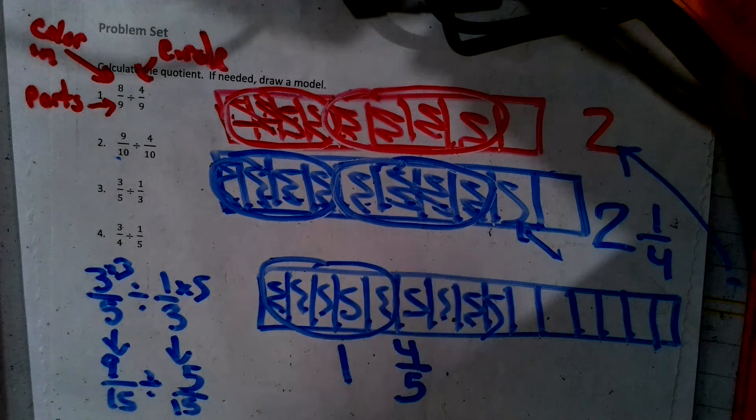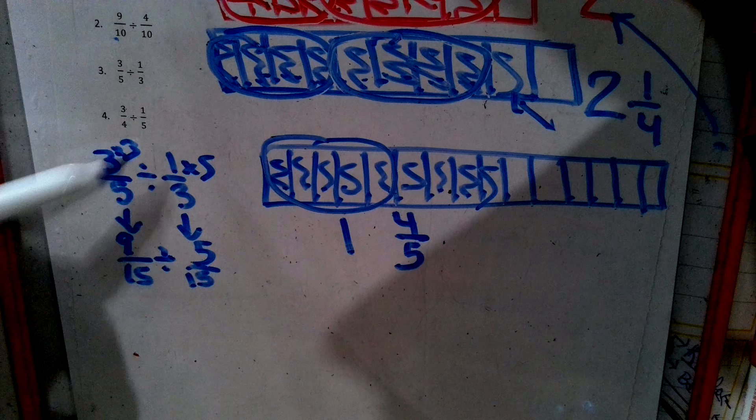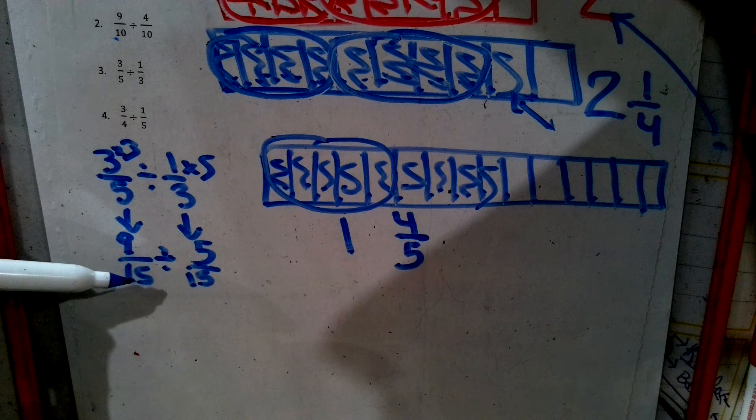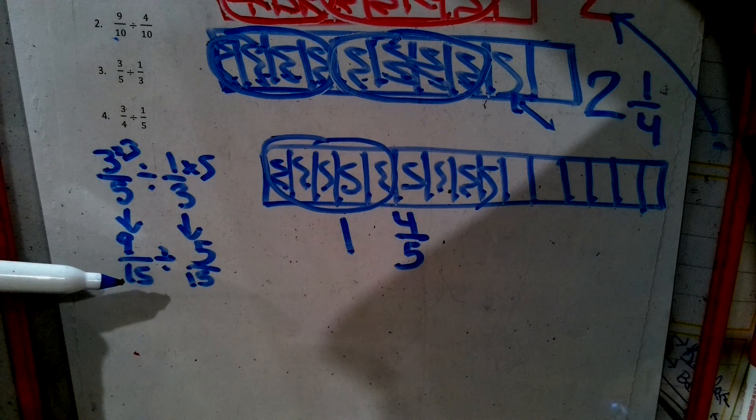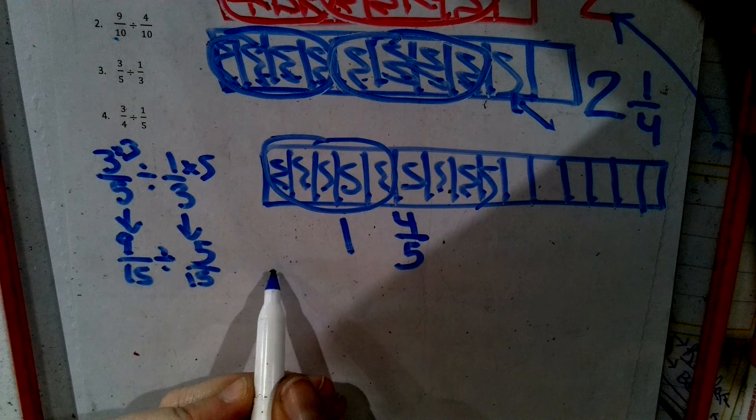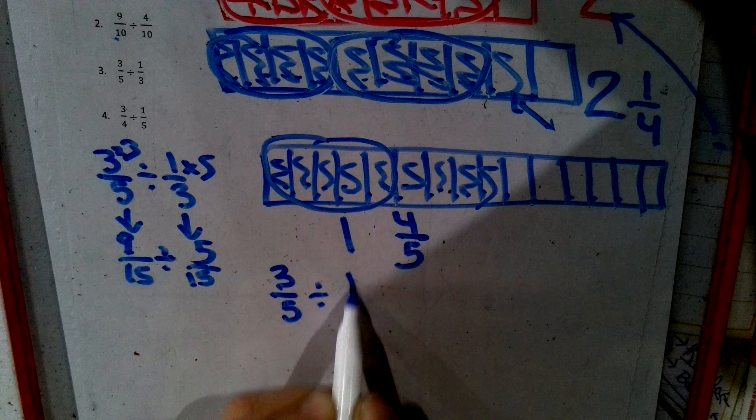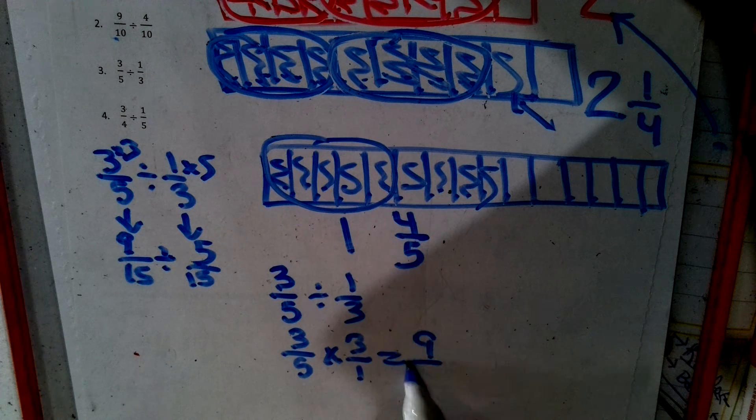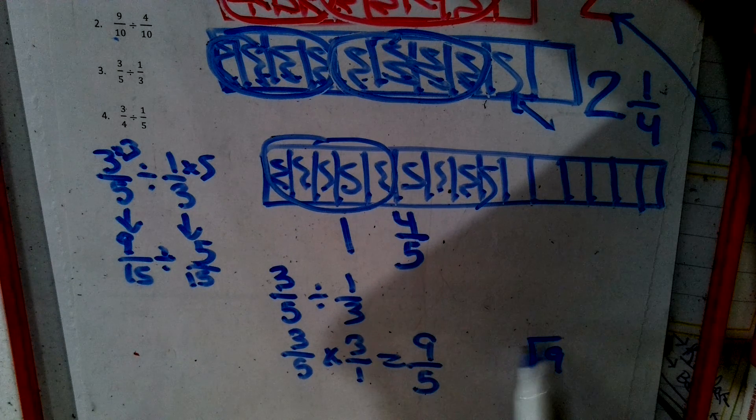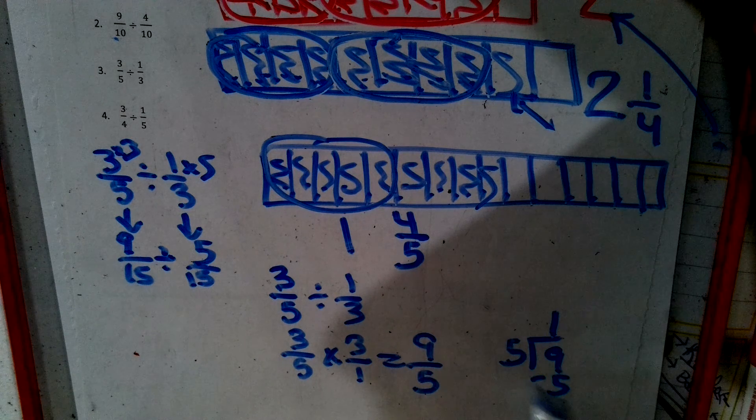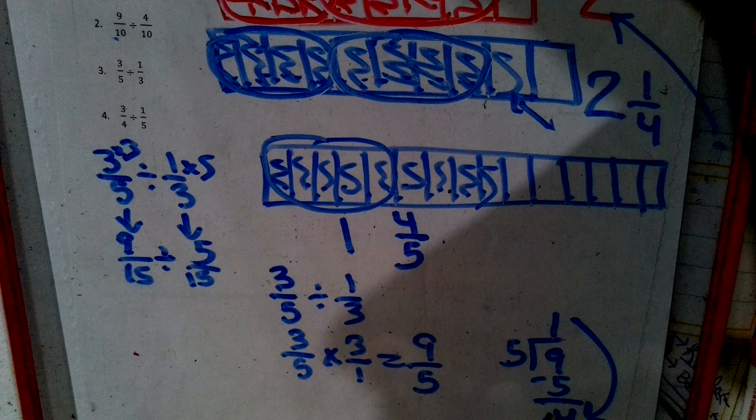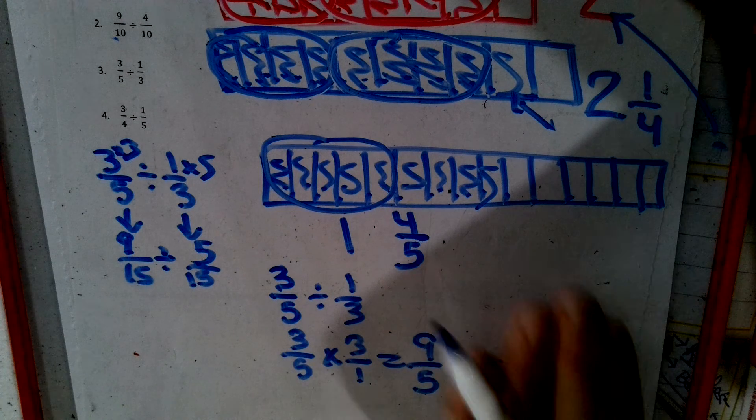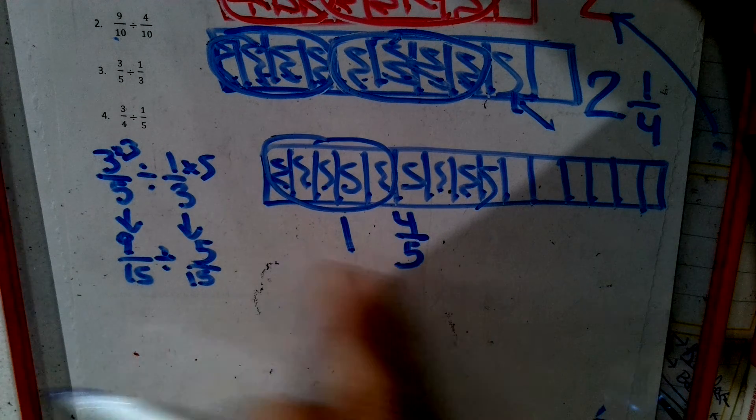Now, when you are doing your standard algorithm, you can either use the original or the one you fixed. It's up to you. If you use the one you fixed, you have a diagonal you can cross out once you flip it. If you don't, you go back to the regular one and you have three fifths divided by one third. Drop, change, flip. Straight across, nine fifths. That's this. How many fives are in a nine? One. Leftovers, four. One and four fifths. Same answer right there.